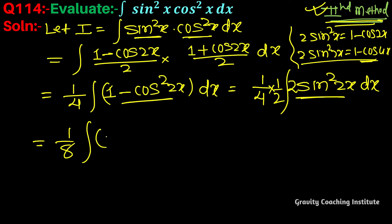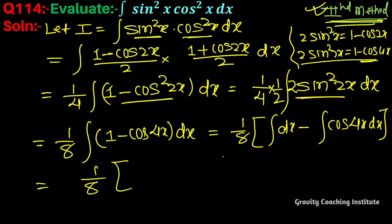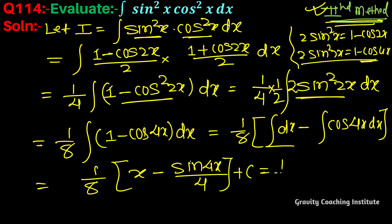Using 2sin²2x equal to 1 minus cos 4x, so 1 minus cos 4x equals 2sin²2x. The final result is one by eight times x minus sin 4x upon 32, plus C — confirming the same required answer obtained by both methods.